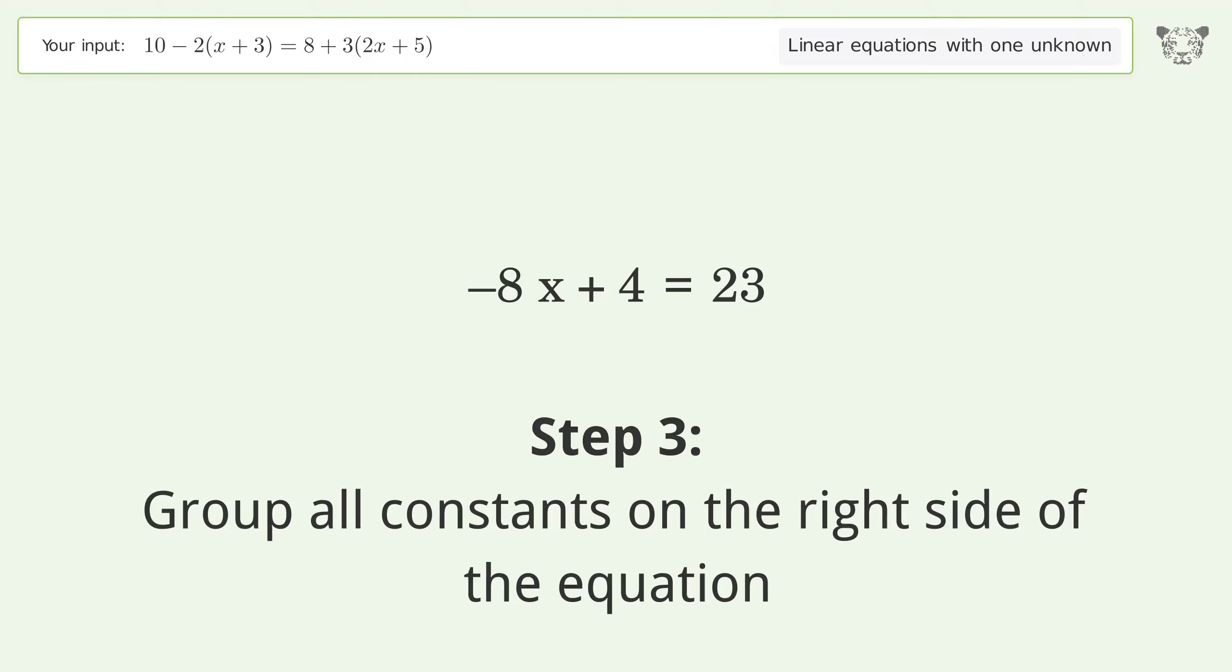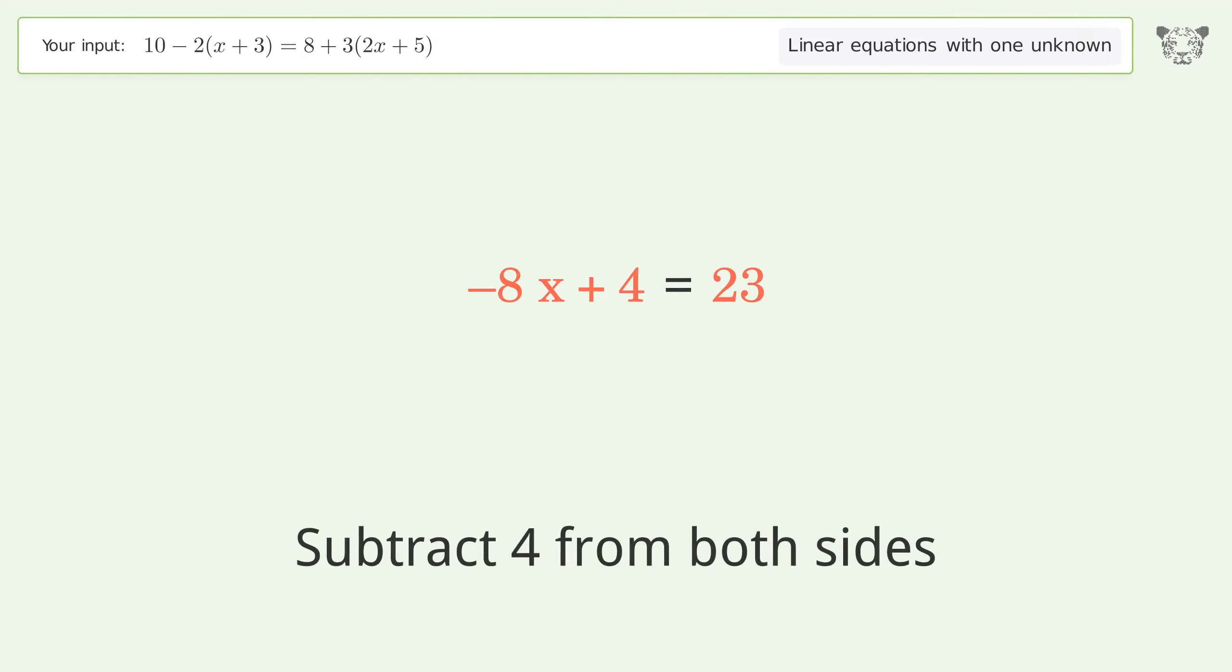Simplify the arithmetic. Group all constants on the right side of the equation. Subtract 4x from both sides. Simplify the arithmetic. Group like terms on the right side of the equation. Isolate the p.